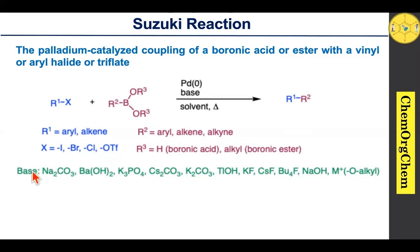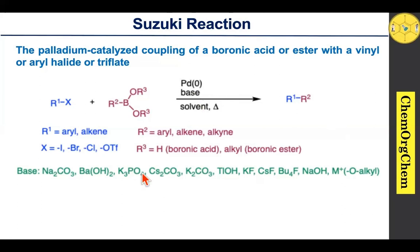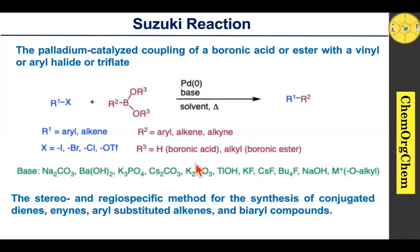If R3 is hydrogen it is called boronic acid; if it is alkyl it is called a boronic ester compound. Various inorganic bases are useful in this reaction, such as sodium carbonate, potassium carbonate, cesium carbonate, and fluoride-type bases such as potassium fluoride and cesium fluoride. Metal alkoxides can also be used as suitable bases for this carbon-carbon coupling reaction.